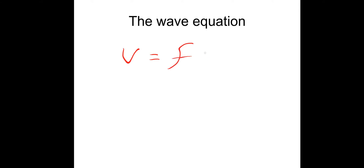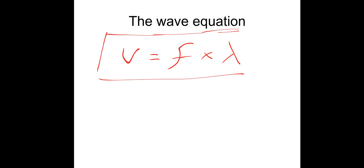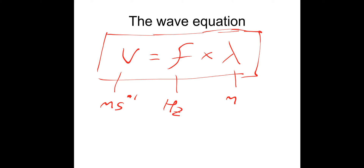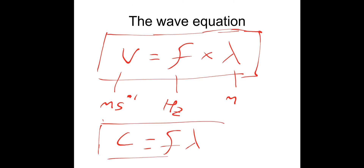The wave equation: wave speed V is equal to frequency times wavelength. V is measured in meters per second, frequency in hertz, and lambda (wavelength) in meters. There's another version of this equation for electromagnetic waves where the wave speed is the speed of light. For that one, we use C equals f lambda — exactly the same units, just C is fixed at the speed of light, which we should know as 3 times 10 to the 8 meters per second.